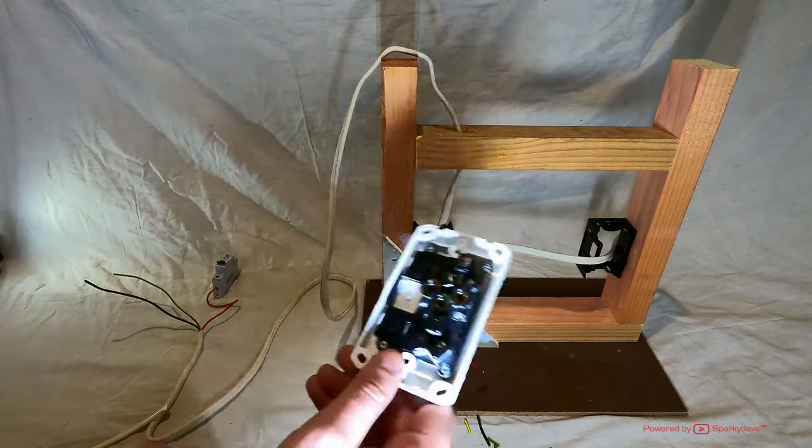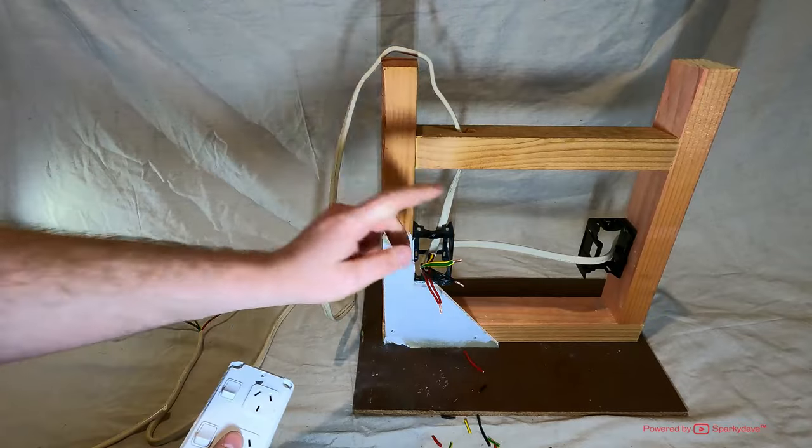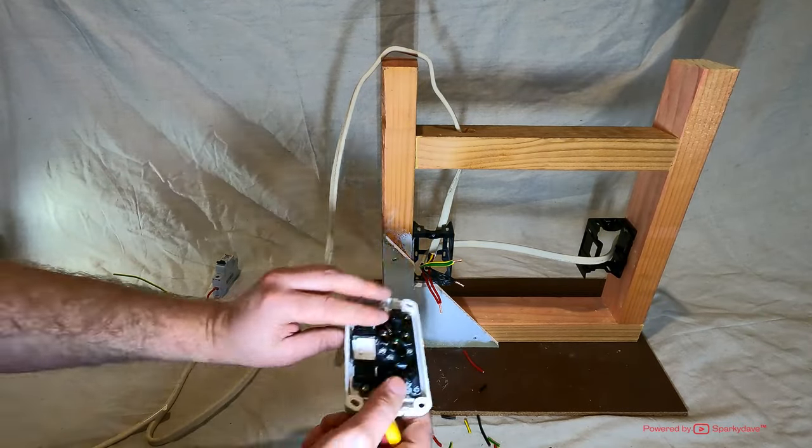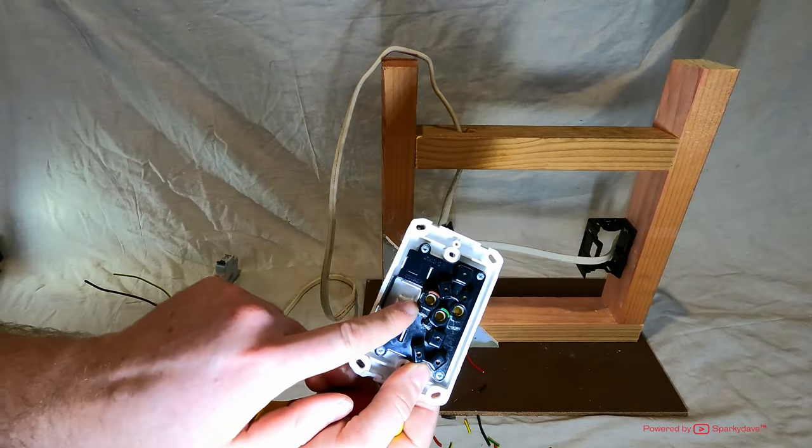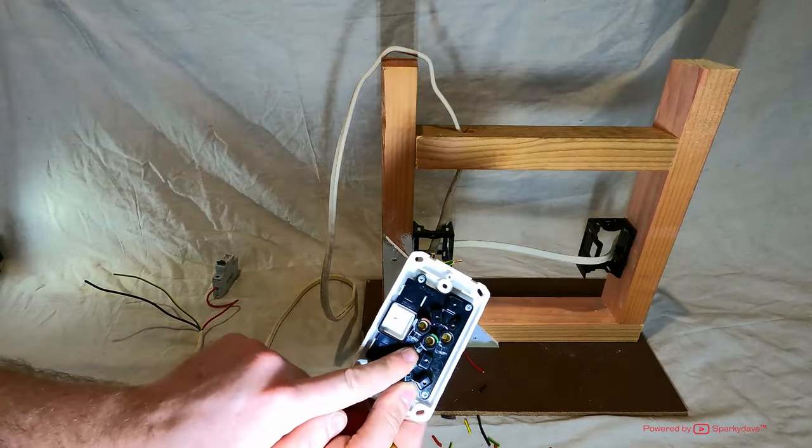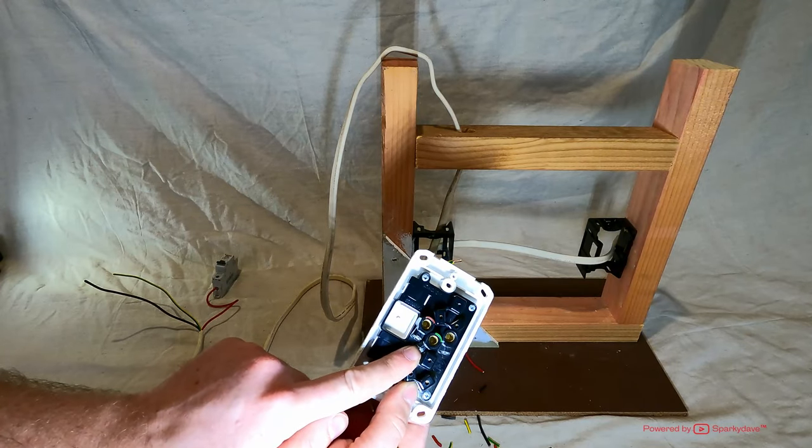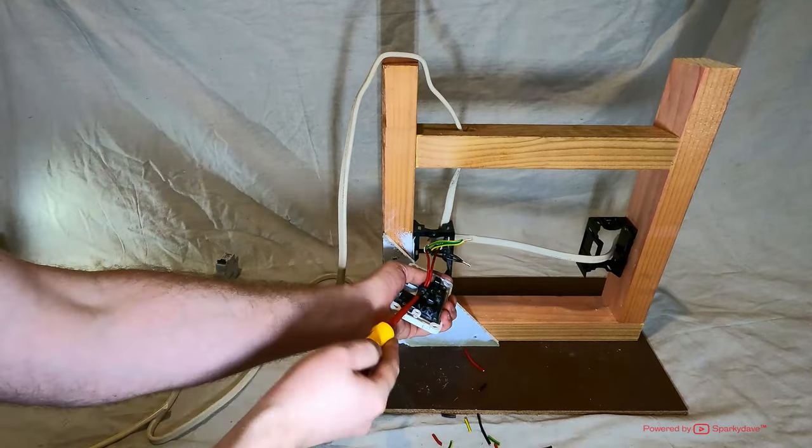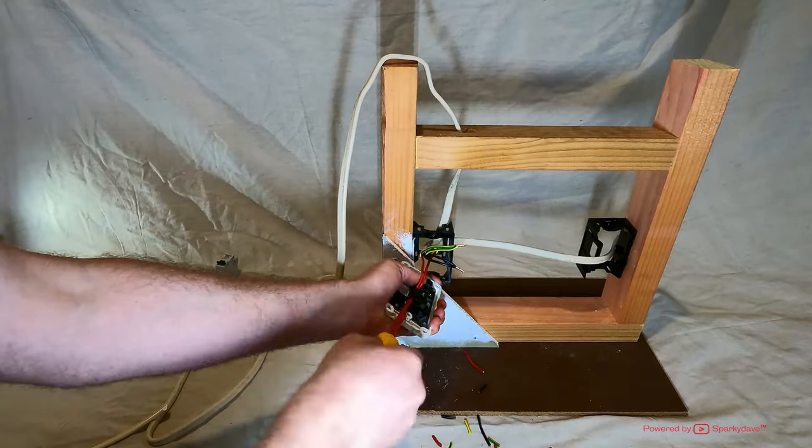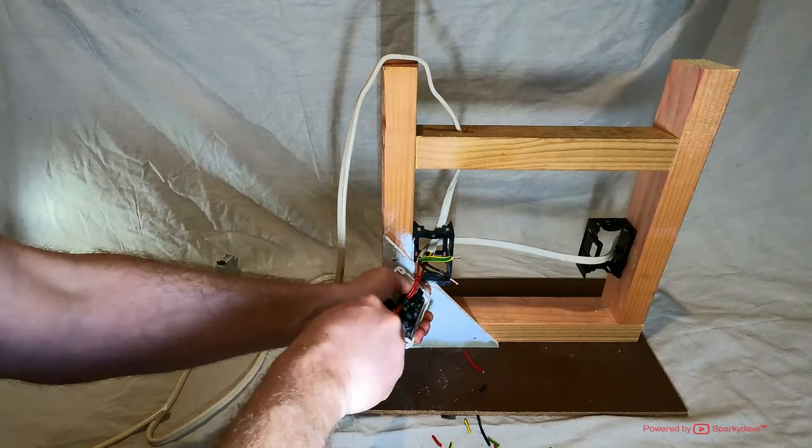What we'll do is install our socket with these cables. So again the red one's going to A which is active or live. The green one's going to E which is your earth and the black one's going to N which is your neutral. Screw the screw in so it's only contacting with the copper and not the insulation.